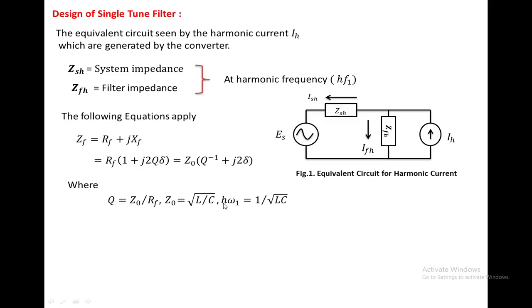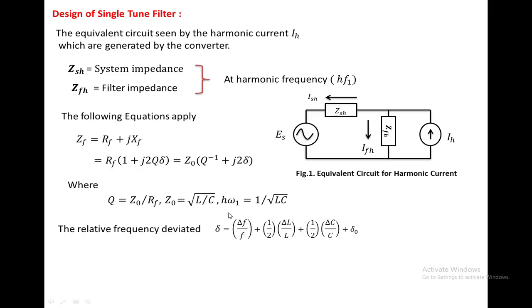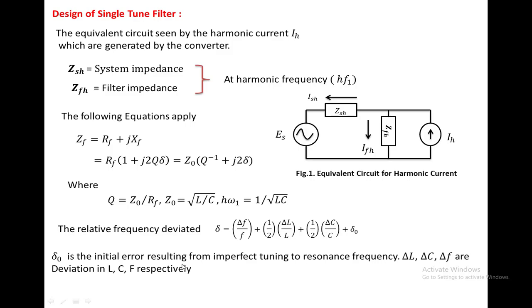H is the harmonic order. The resonance condition is: H·omega1 equals 1 over root(LC). The relative frequency deviation delta equals delta_F over F, plus one-half·(delta_L over L), plus one-half·(delta_C over C), plus delta_0. Here delta_0 is the initial error during tuning of the resonance frequency, and delta_L, delta_C, and delta_F are the deviations in inductance, capacitance, and frequency respectively.